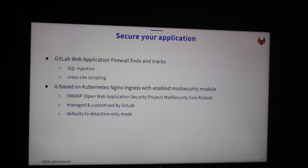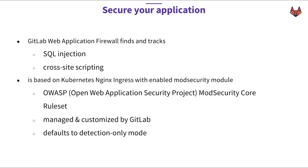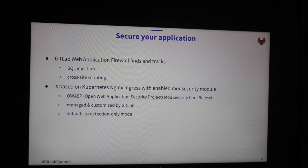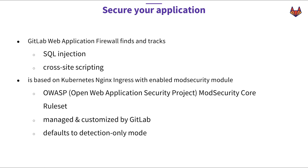Basically two things the firewall can do: detect and track SQL injections as well as cross-site scripting. So you can secure your application and get insights on attacks. The whole thing is based on the Kubernetes Nginx Ingress with the mod_security module enabled. The mod_security module has enabled rulesets to find those injections, based on the Open Web Application Security Project - OWASP - which is open source. These default rules are slightly customized by GitLab but totally managed, so you don't need to care about them if you stay with defaults.